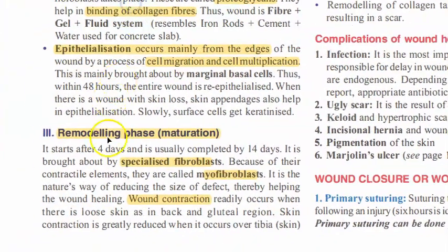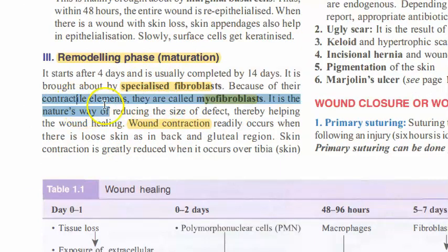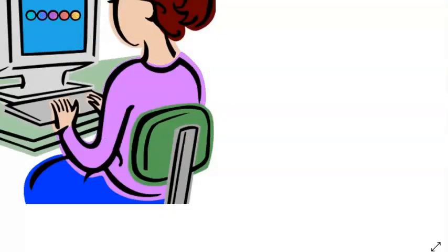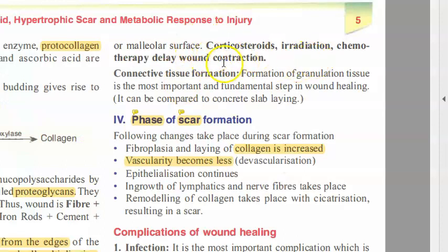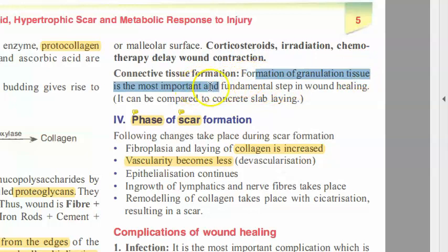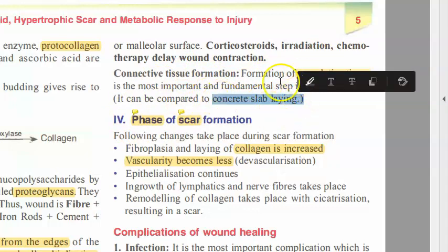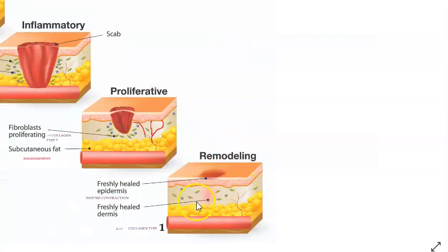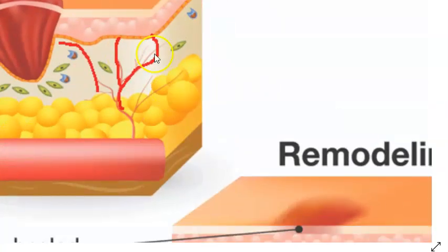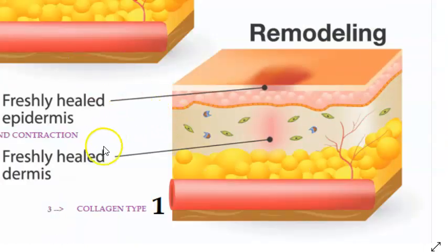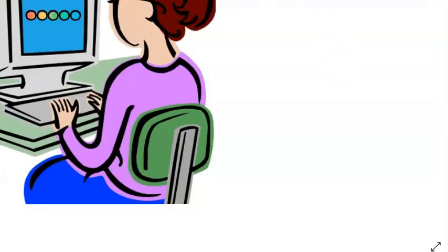After the proliferative phase, we move to the remodeling or maturation phase. Here there are specialized fibroblasts called myofibroblasts — these are contractile elements, so wound contraction occurs and there is a reduction in the size of the defect. Factors like steroids, chemotherapy, and irradiation will delay wound contraction. Formation of granulation tissue is the most important and fundamental step in wound healing.